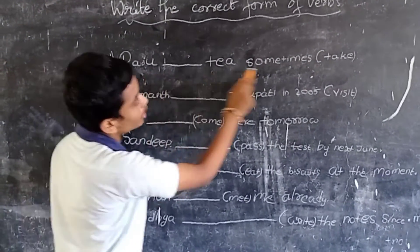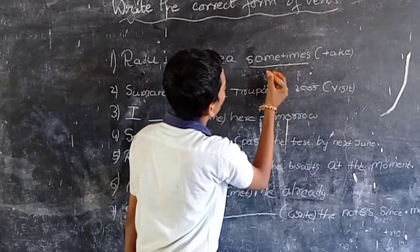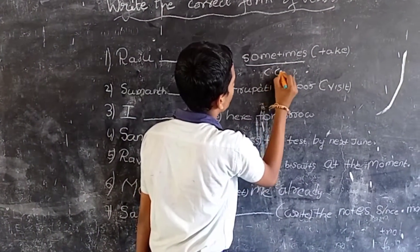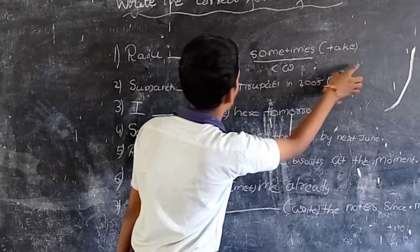The first example is: Raju takes tea sometimes. Here, the clue word is sometimes. So, we have to write, Raju takes tea sometimes.